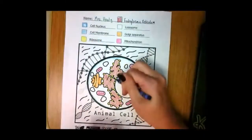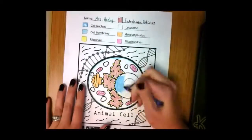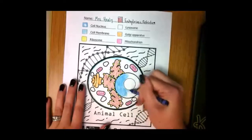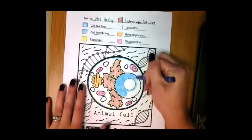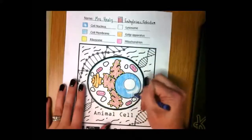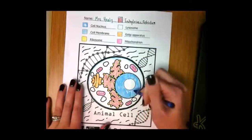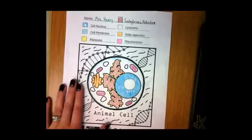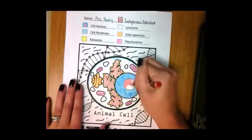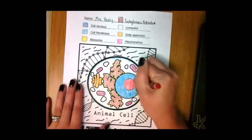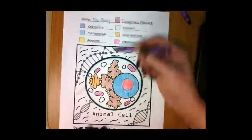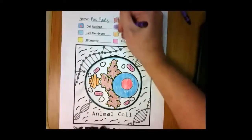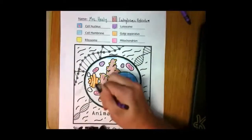The membrane keeps substances out; inside the cell is filled with cytoplasm. Lysosomes help break things down. Energy comes from the mitochondria. Ribosomes are the protein factories. The endoplasmic reticulum transfers substances like proteins. The nucleus controls them all.